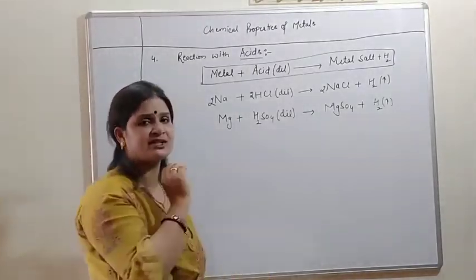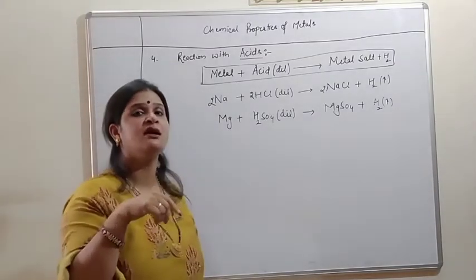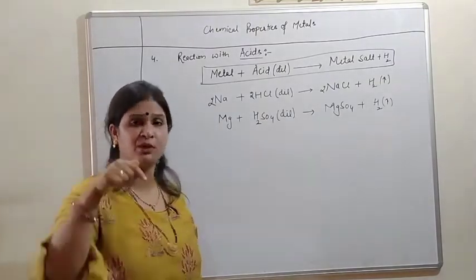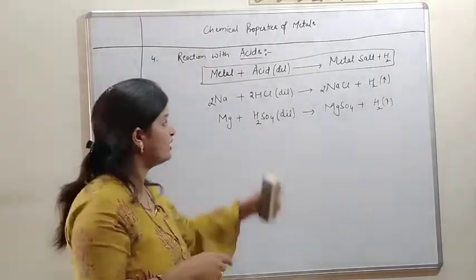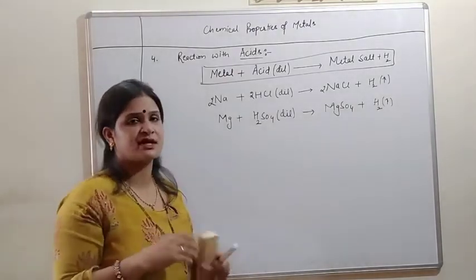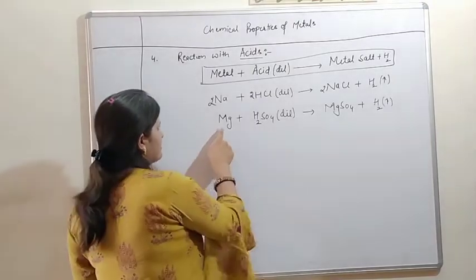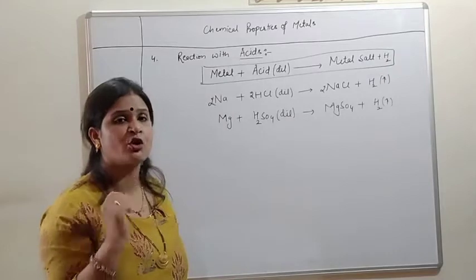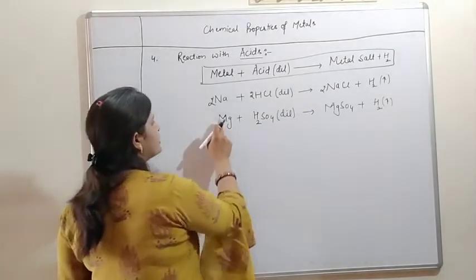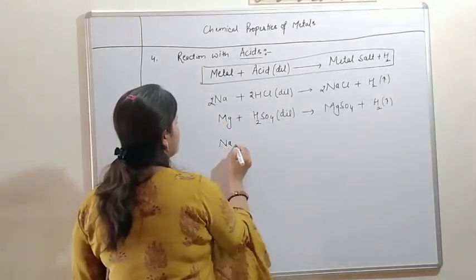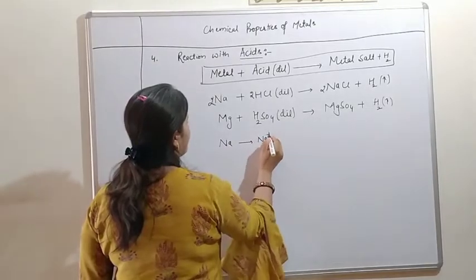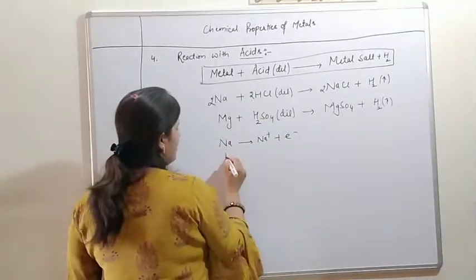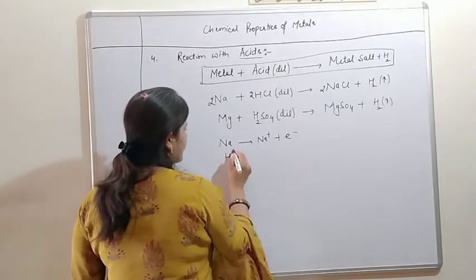How does this reaction take place? Metals like sodium, potassium, calcium are electropositive. They have the tendency to lose electrons. Sodium will lose an electron and a positive ion will be formed. HCl will release the H+ ion.